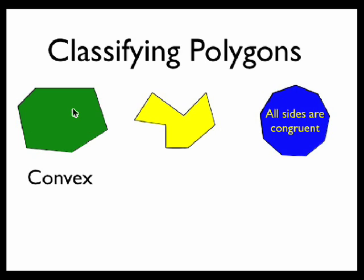so it's not equally angular, equilateral, or regular. And there are six sides, so this would be classified as a convex hexagon.